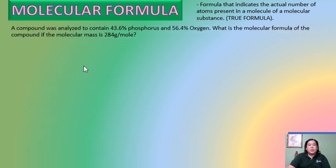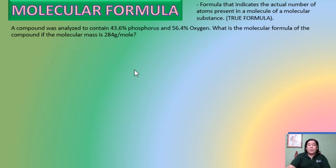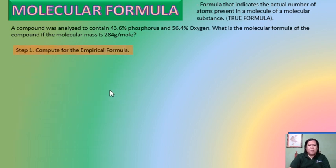In our first example, a compound was analyzed to contain 43.6% phosphorus and 56.4% oxygen. What is the molecular formula of the compound if the molecular mass is 284 grams per mole? This molecular mass of 284 g/mol is given in the problem — you cannot compute it yourself. It is based on experimental data, so it is always provided. Now let's start with step one.